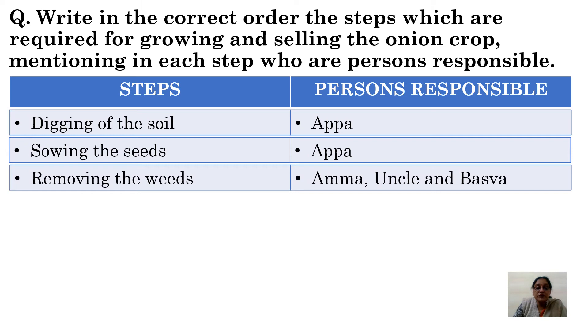The third step is removing the weeds. The unwanted plants — weeds — that had grown in their field were removed by Amma, Uncle, and Baswa.